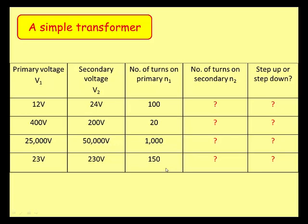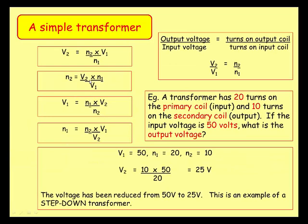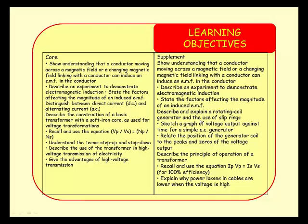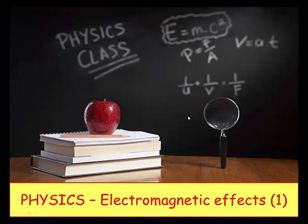Here are some practice examples where you're given primary voltage, secondary voltage, and number of turns in N1, and you have to calculate the number of turns in the secondary and work out if it's step up or step down. Pause the video now and have a go before I give you the answers. The answers: first case — 200 turns, step up; second — 10 turns, step down; third — 2000 turns, step up; fourth — 15 turns, step up.